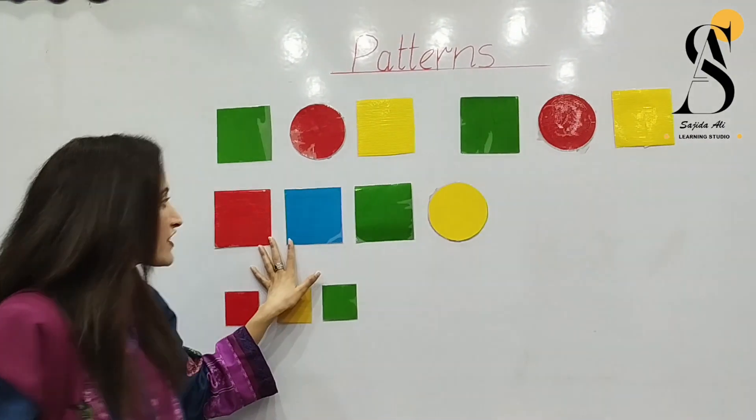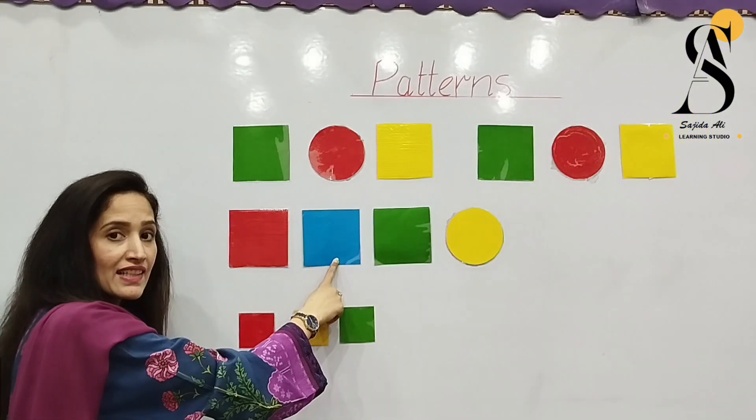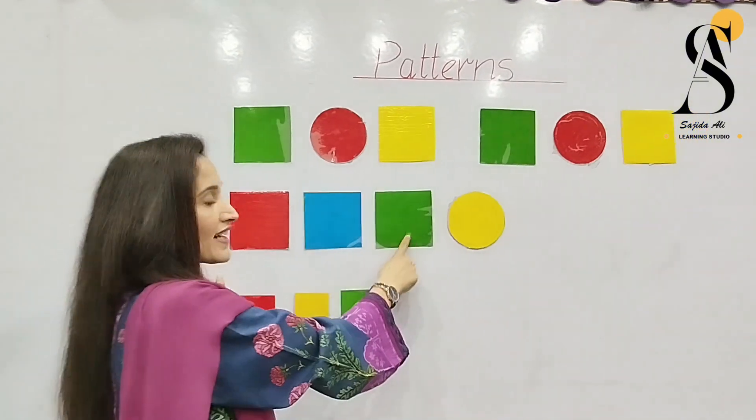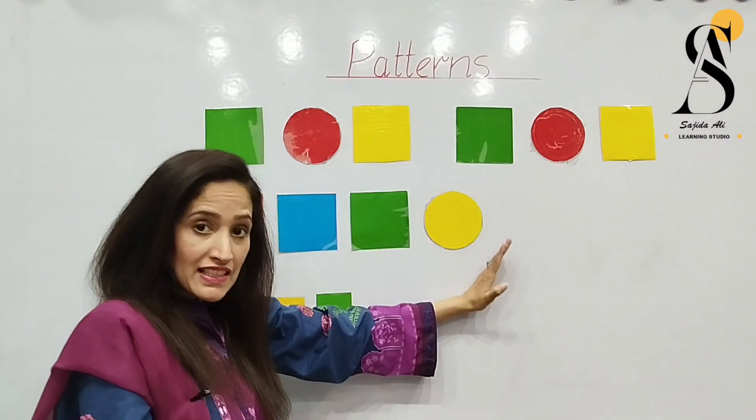Let's see the next pattern. Here you can see red square, then blue square, then green square and yellow circle. So what will come next?